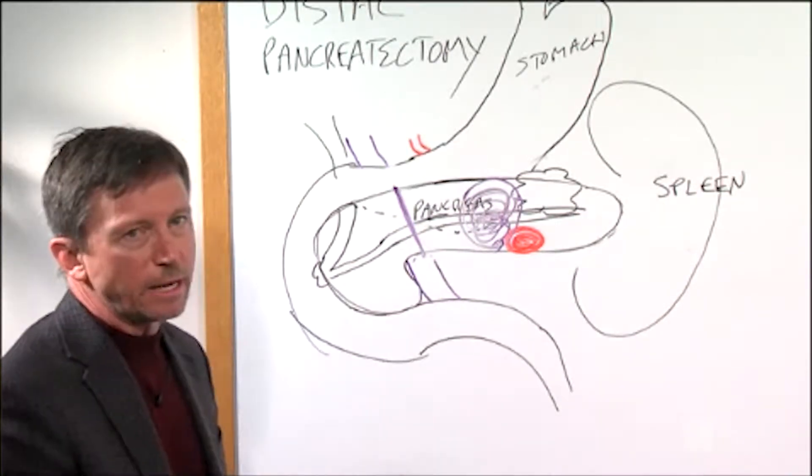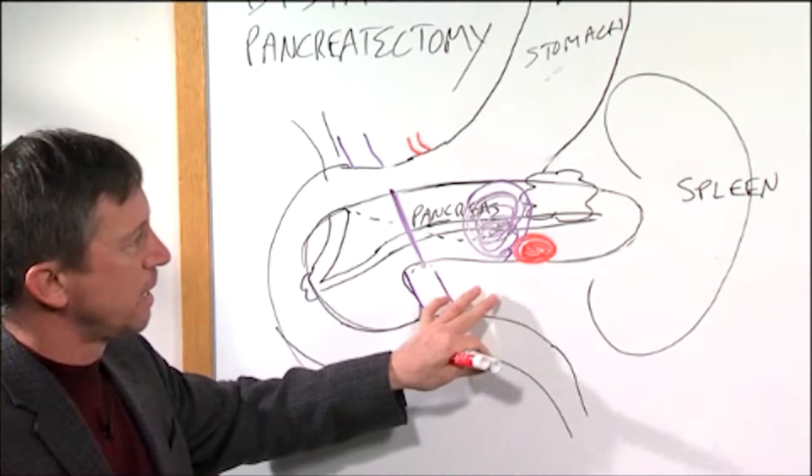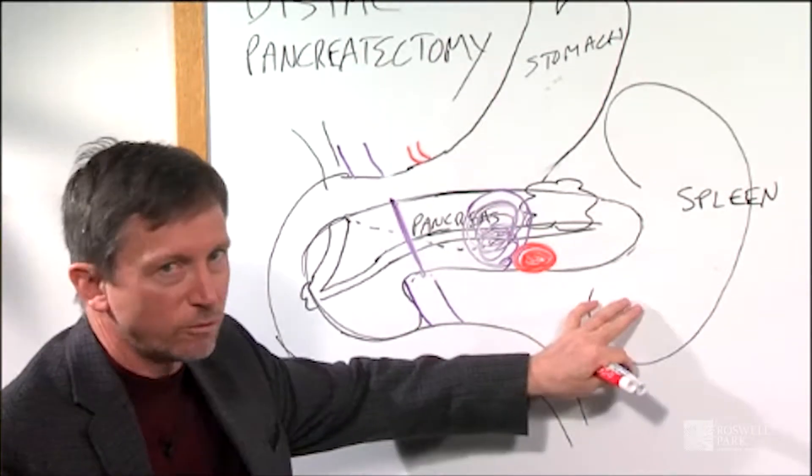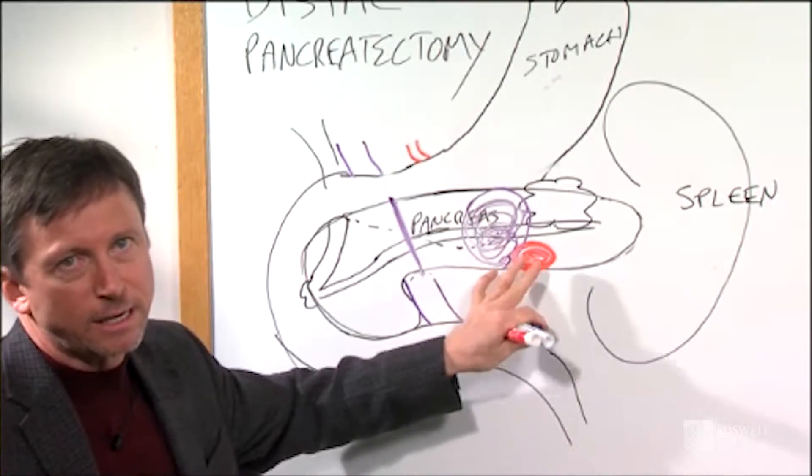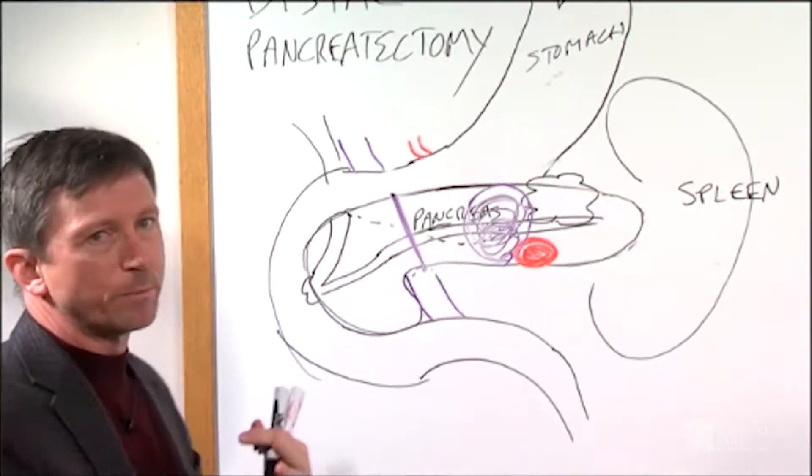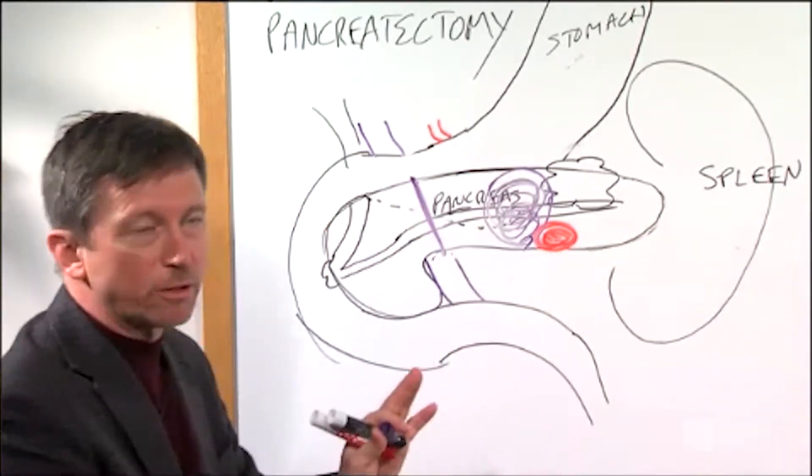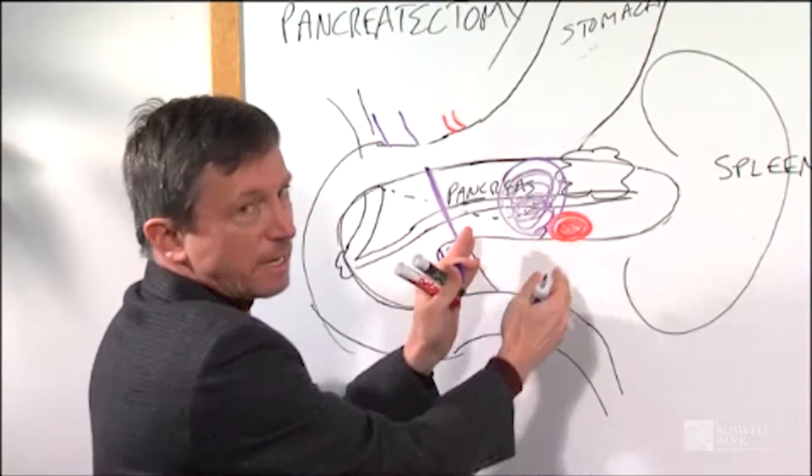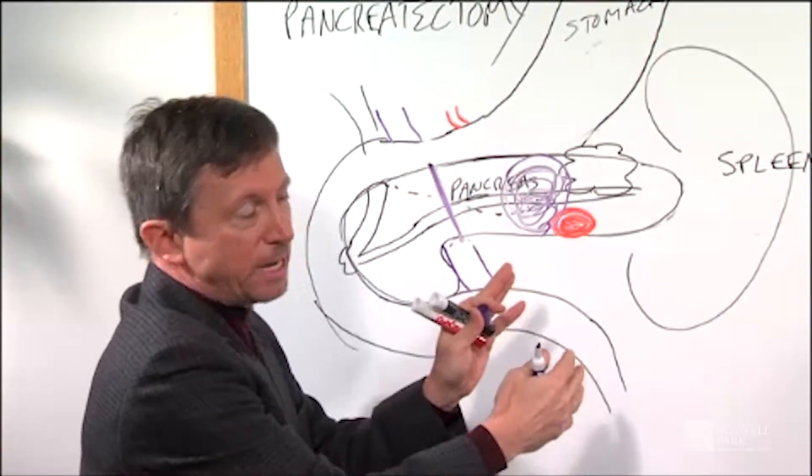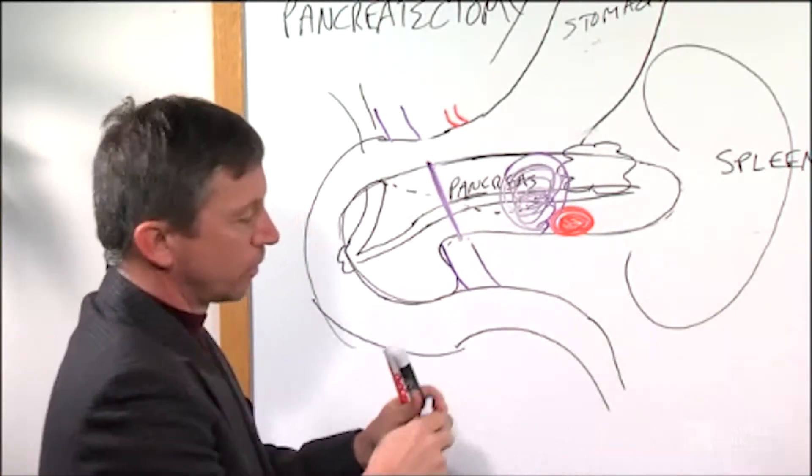There are two versions of this: one would be a splenic-preserving distal pancreatectomy, and the other would include both removal of the spleen and the pancreas. A lot of that is determined by the type of tumor you have. If it's a more benign or precancerous tumor, we may do what's called a splenic-preserving procedure where we actually just remove the tail of the pancreas. However, if it's a cancerous or suspected to be a cancerous tumor, we will remove the spleen along with the pancreas for a couple of reasons.